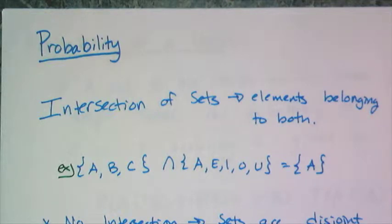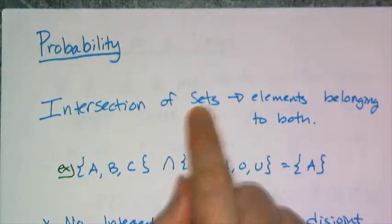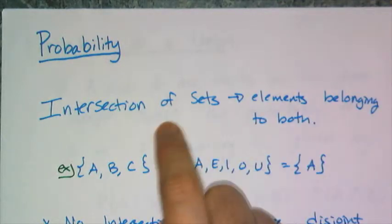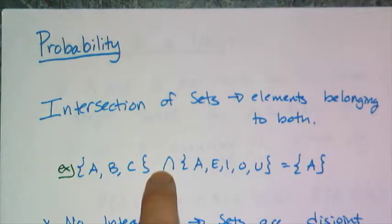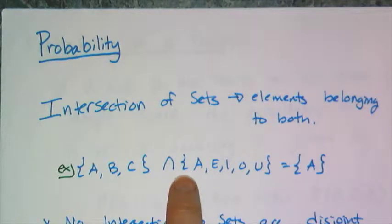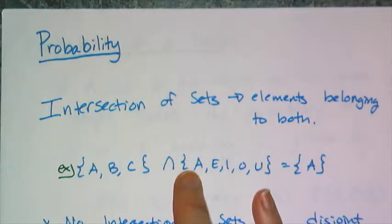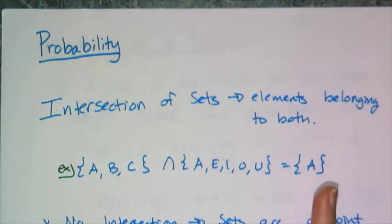Discrete probability is all about counting the number of items in sets. First, we'll talk about the intersection of sets, and these are elements that belong to both, meaning they are common to both. For example, using our set notation, I have the set ABC, and then I have an upside-down U, which stands for intersection, and then I have another set AEIOU. If I want to find the intersection of these two sets, they are the elements common to both sets, which in this case is the letter A.